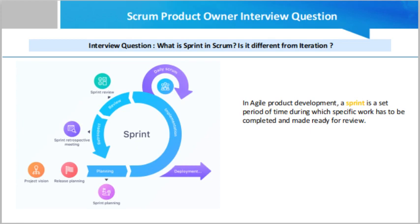In agile product development, a sprint is a set period of time during which specific work has to be completed and made ready for review. Each sprint begins with a planning meeting. During the meeting, the product owner and the development team agree upon exactly what work will be accomplished. The development team has the final say on how much work can realistically be accomplished during the sprint.